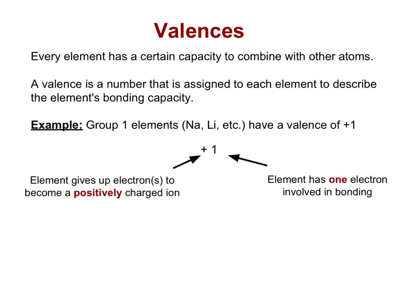For example, group one elements such as sodium or lithium all have a valence of plus one. The plus means that the element will give up electrons to become a positively charged ion, and the one tells us how many electrons are involved in bonding. With group one elements, those elements only have one electron involved in bonding.